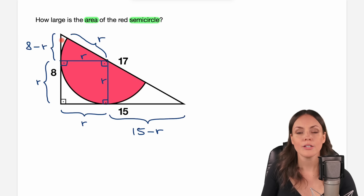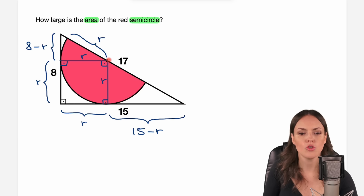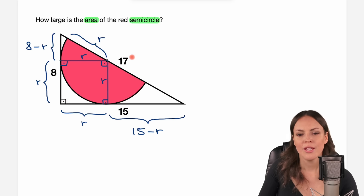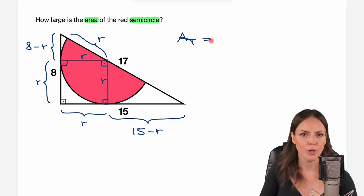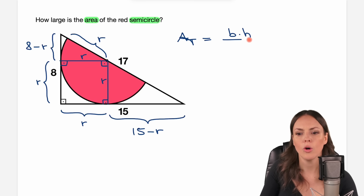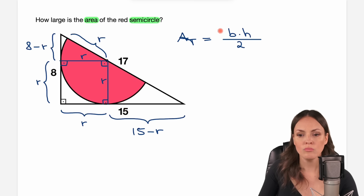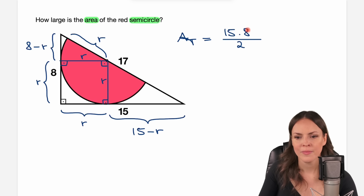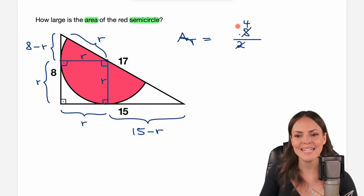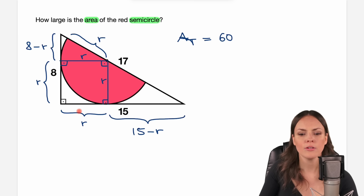The big triangle consists of these three parts, and we can also find the area of the big triangle because we have the lengths of all the sides and we know it is a right triangle. The formula is base times height over 2. Taking 15 as the base and 8 as the height (the side perpendicular to the base), we get 8 over 2 equals 4, and 4 times 15 equals 60. So the area of the big triangle is 60.